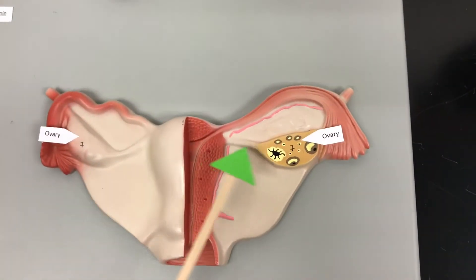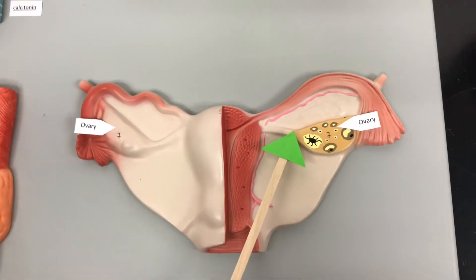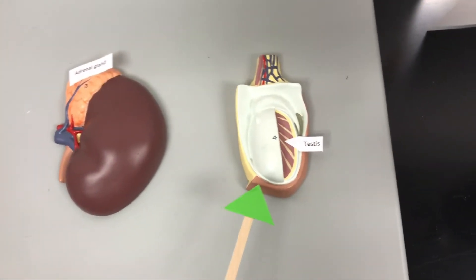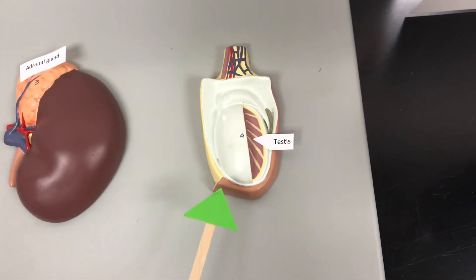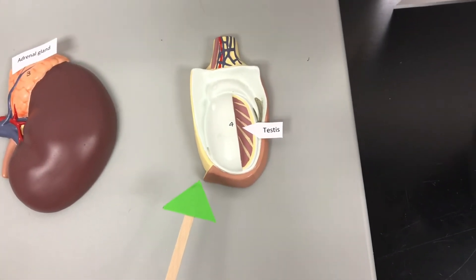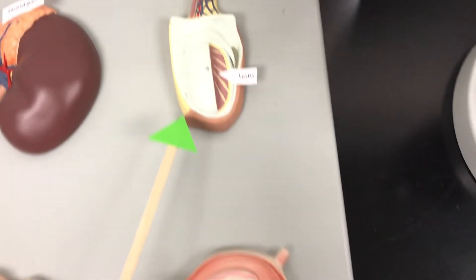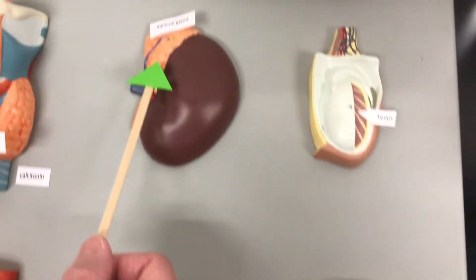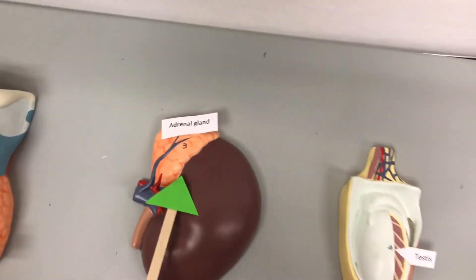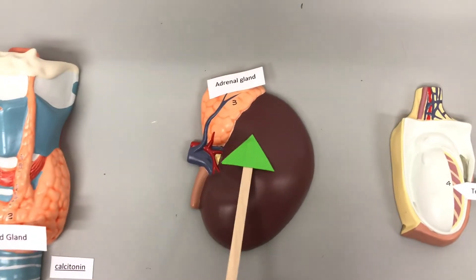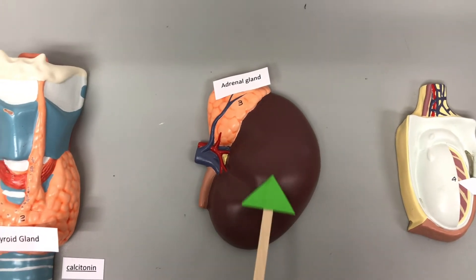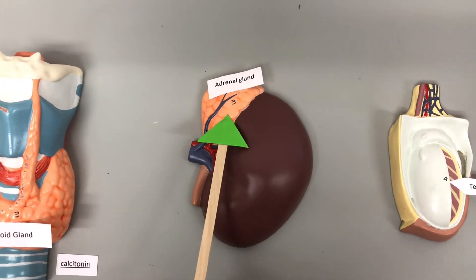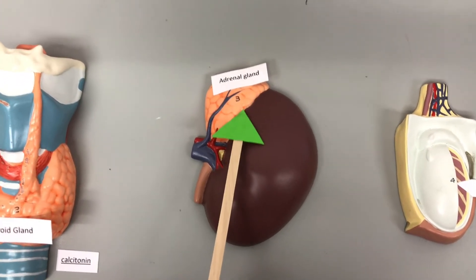The ovaries and the testes are going to produce secondary sex hormones directed by luteinizing hormone. The adrenal gland sits on top of the kidney — renal means kidney, and the adrenal gland is on top of the kidney.